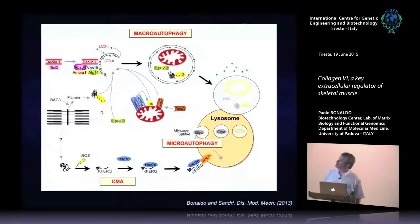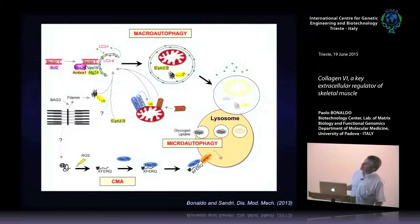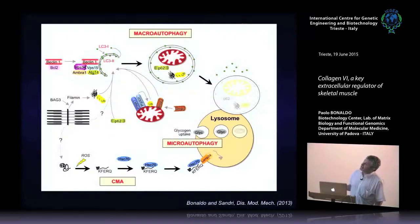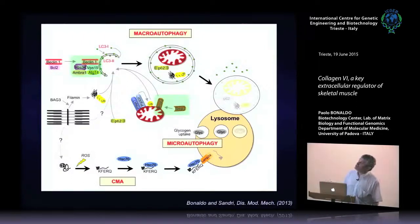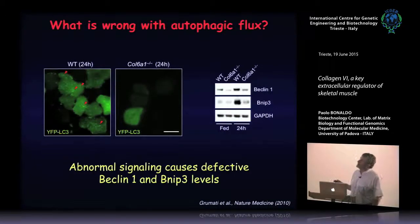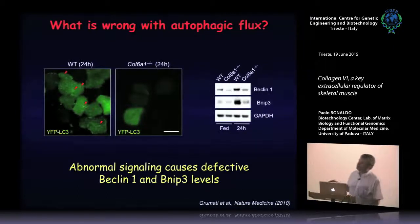Focusing on specific proteins involved in autophagosome formation: we focused on Beclin-1, which is important for forming the complex needed for autophagosome formation, and on Nip3 (BNIP3), important for mitophagy. We found that both Beclin-1 and Nip3 in knockout mice are defective — after starvation they increase a lot in wild-type as expected, but not in knockout. The next question was: can autophagy be reactivated? Is this a complete block, or can we overcome this defect?